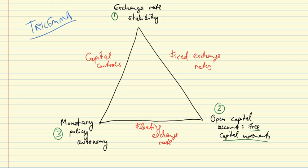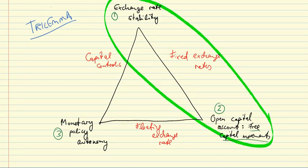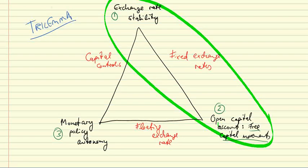Having laid out the trilemma, I want to focus on two things. First, we'll talk about post-World War Two history — the decades often called the golden age of capitalism, or the Bretton Woods system. Exchange rates were largely fixed among key countries, and capital accounts became increasingly open through the emergence of eurodollar markets throughout the 1960s and into the 70s, meaning monetary policy autonomy had to be given up.